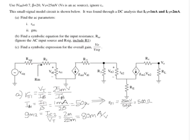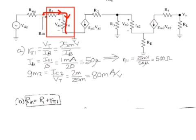GM2 is equal to IC2 over the thermal voltage Vt. This gives RPI1 as 500 ohms and GM2 as 80 millisiemens.